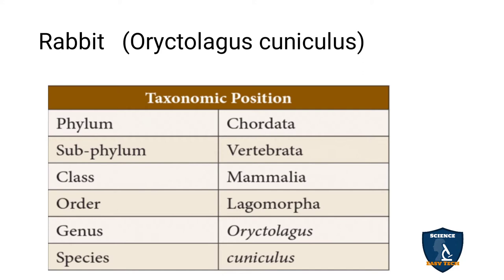We will see the taxonomical or systematic position of rabbit. Phylum Chordata, having backbones. Subphylum Vertebrata, class Mammalia — milk-producing glands and hairs are present on the body. Order Lagomorpha, genus Oryctolagus, and species cuniculus. This may be asked in your 2-mark question: write the taxonomic position of rabbit, from phylum to species.